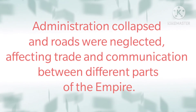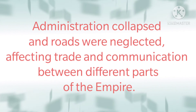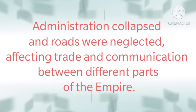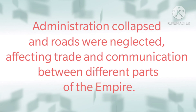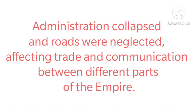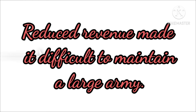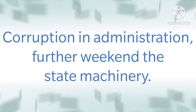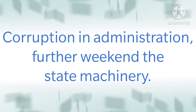Third, administration collapsed and roads were neglected, affecting trade and communication between different parts of the empire. Fourth, reduced revenue made it difficult to maintain a large army. And lastly, corruption in administration further weakened the state machinery.